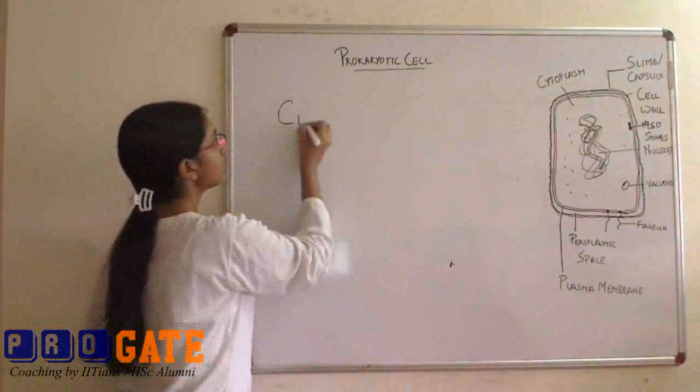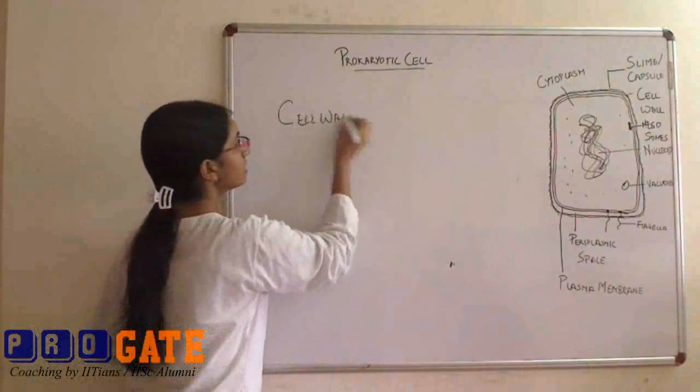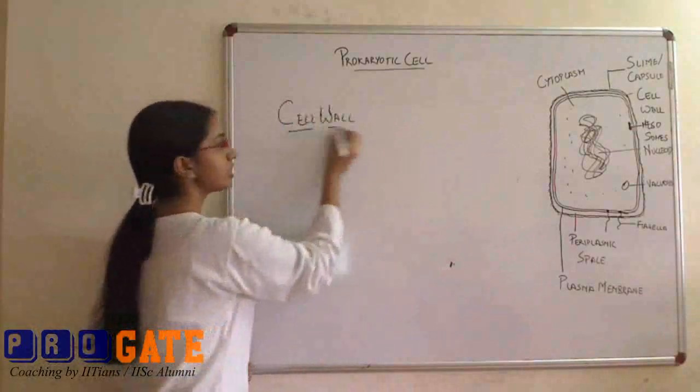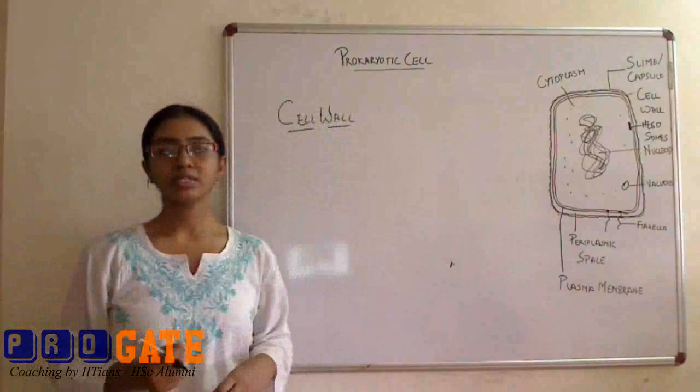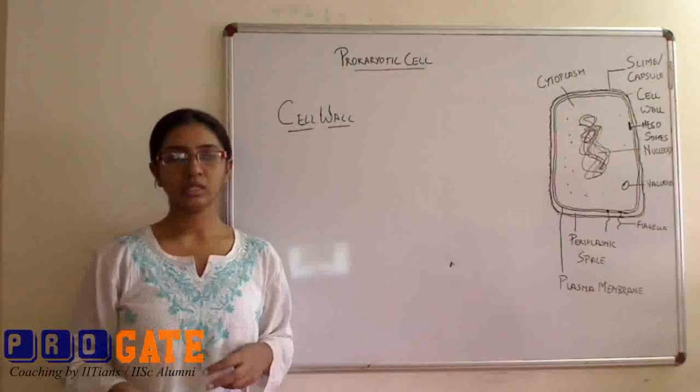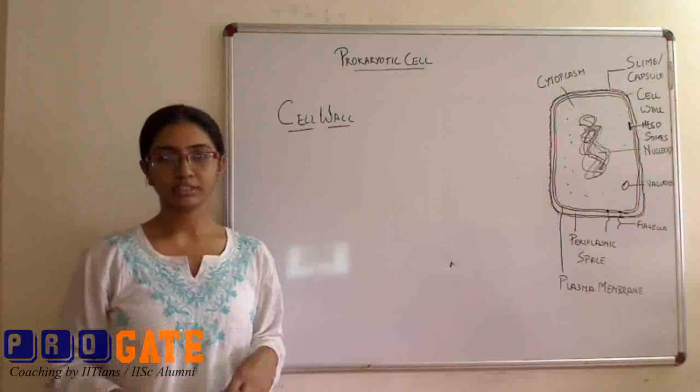The cell wall basically is the outermost covering that has two primary functions. One is the protection and second is providing the shape to the cell. So what are the components which provide the shape and protection are different, and that's how the various bacteria work.